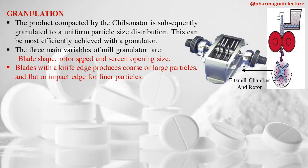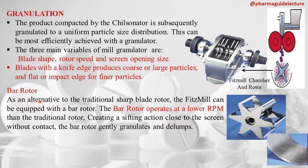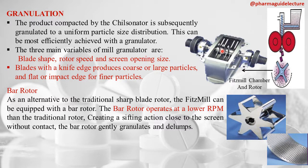The blade shape affects particle size — blades with knife edges produce coarse particles, whereas blades with flat or impact edges produce finer particles. An alternative to the traditional sharp blade rotor is the bar rotor, which operates at lower RPM than traditional rotors, creating a sifting action close to the screen without contact, and generally granulates and delumps the sheets.